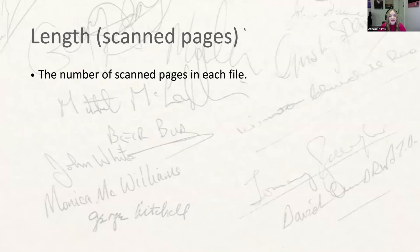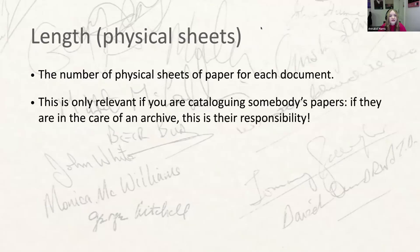The next field is length in scan pages — self-explanatory; you just give the number of scan pages in the file. This field isn't visible to users in Quill but is more of an internal audit field that allows us to check whether any digital pages have been lost in the process of cataloguing. The length in physical sheets field probably won't be necessary very often — we only use it while cataloguing papers, as it's necessary to record the number of physical sheets in a collection to preserve the papers against loss or theft.